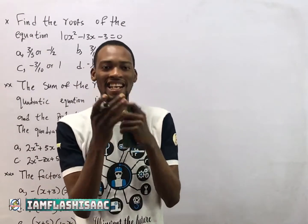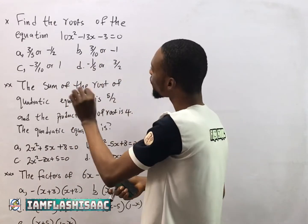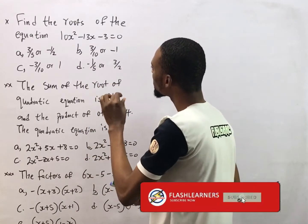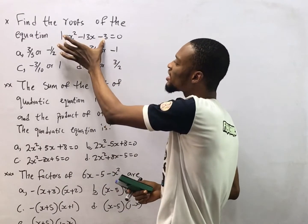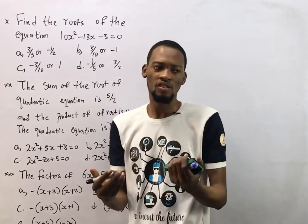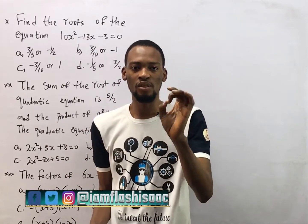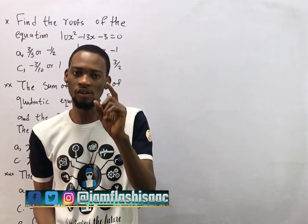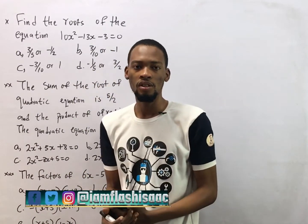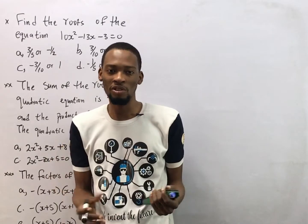Hello guys, I am Flash Isaac and let's solve this question. The first question says: find the root of the equation 10s squared minus 13s minus 3. This is simply a quadratic equation. Finding the root of a quadratic equation is another way of saying solve it, and after solving we arrive at two answers — these are the roots. There are many ways to solve a quadratic equation: the graphical method, the factorization method, and the formula method.